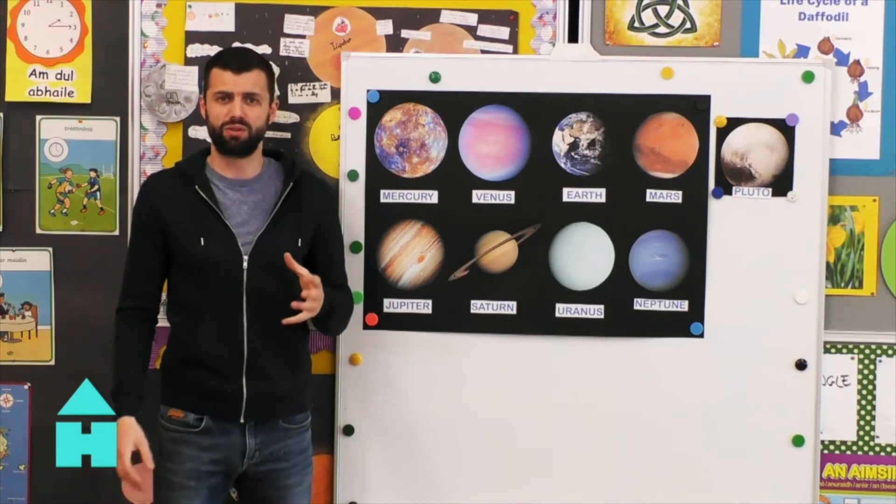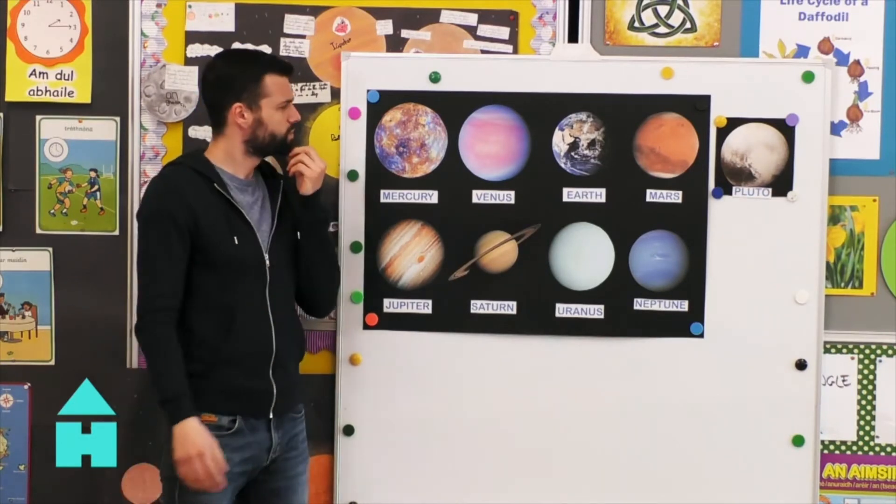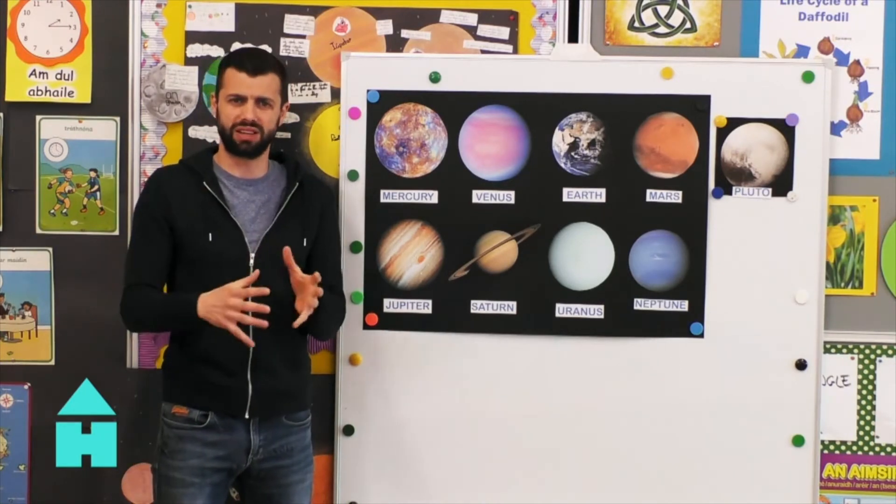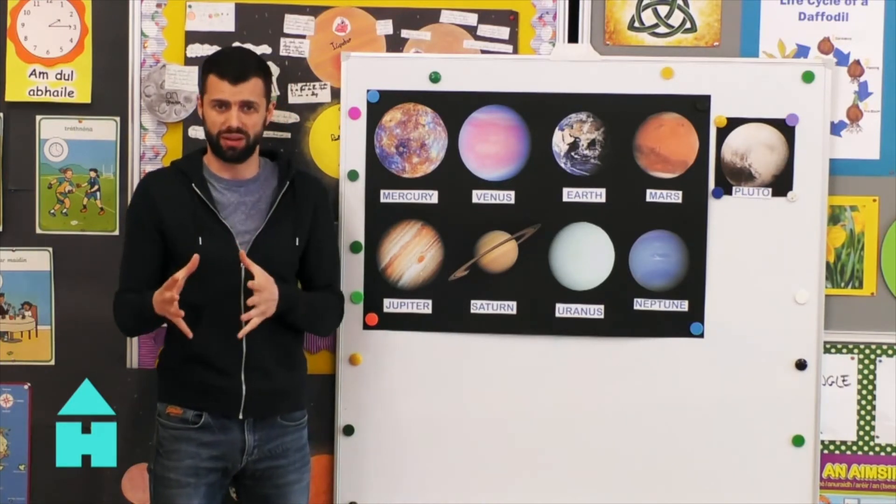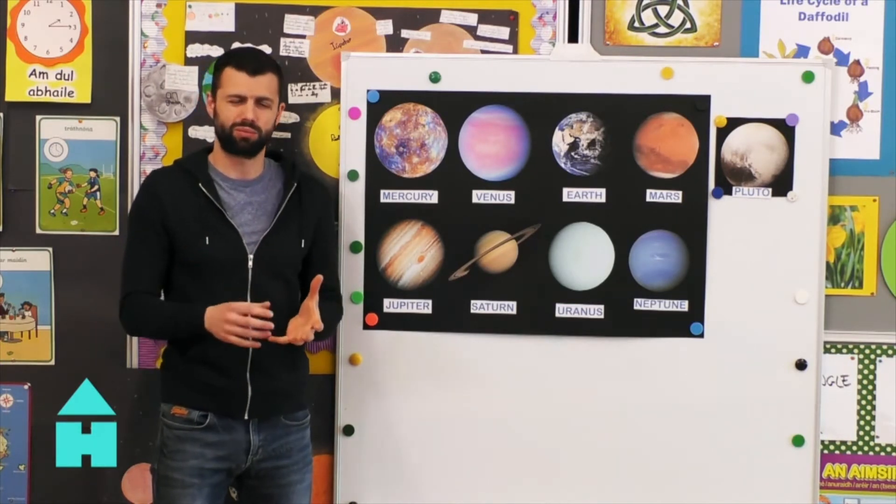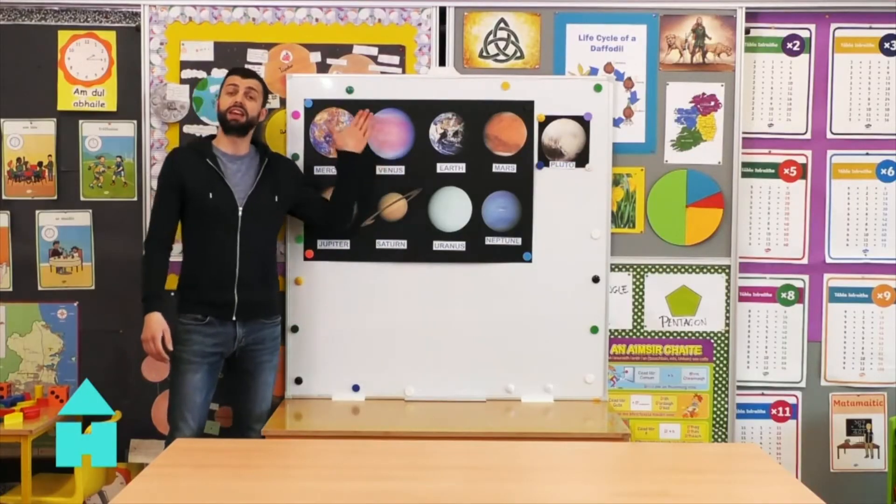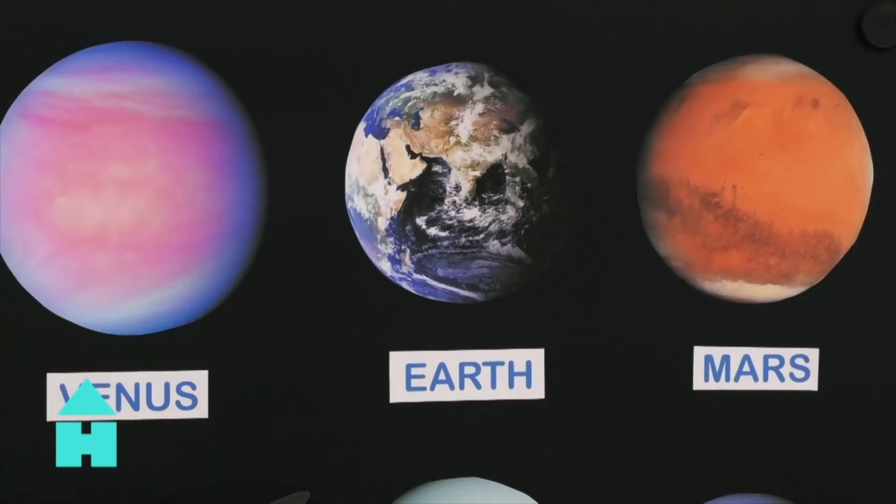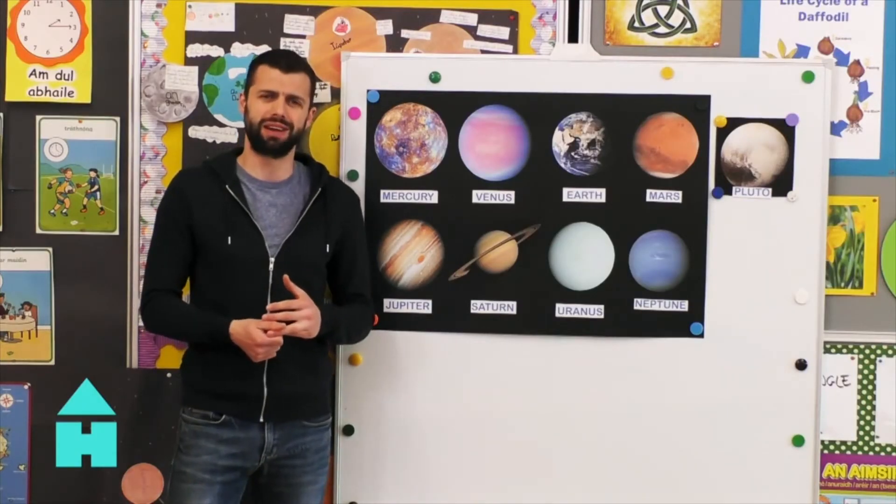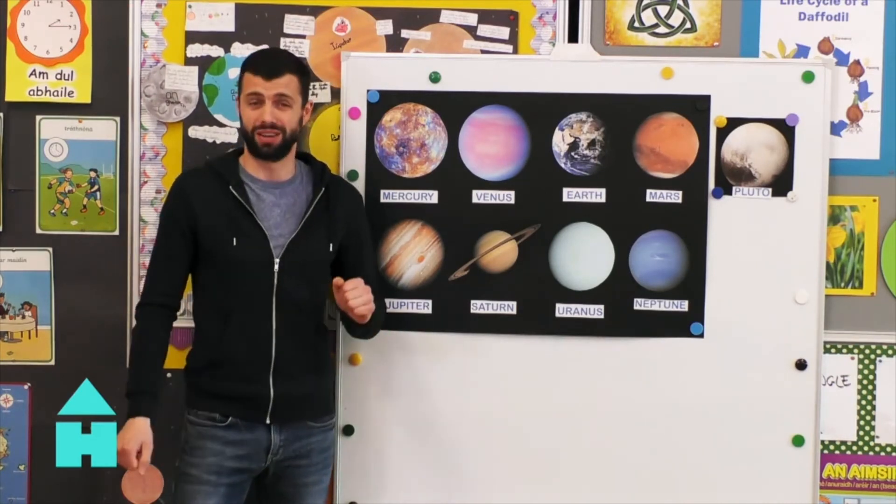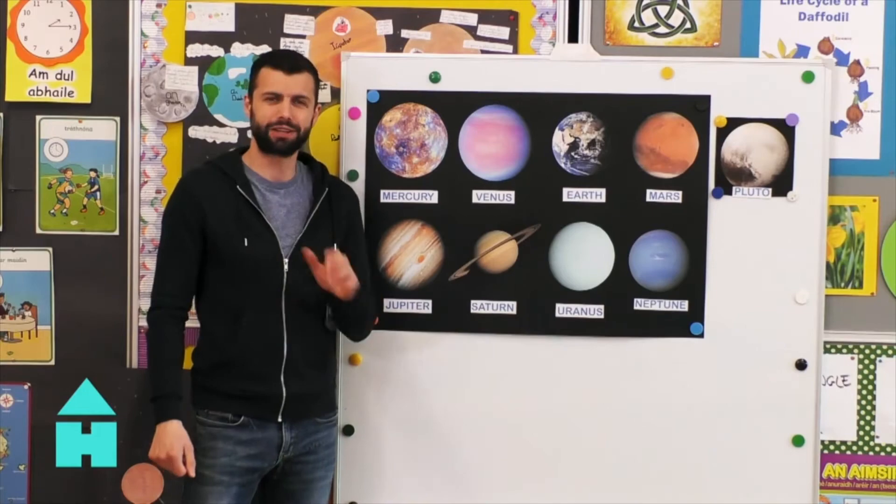It's not known for sure how Earth got its name. One theory is that the name came from the old English and German words Eorthe and Erde meaning ground. But we're not totally certain. The Earth is the only planet in our solar system that is not named after a Greek or a Roman god or goddess. Let's give it a holiday rating. Would highly recommend Earth to go on holidays.